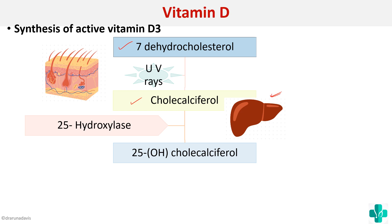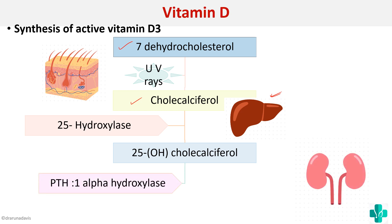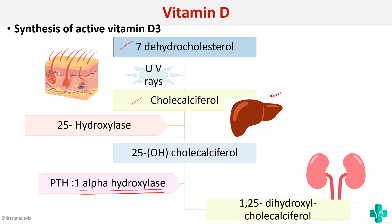In the liver, cholecalciferol is converted to 25-hydroxycholecalciferol by 25-hydroxylase. Then 25-hydroxycholecalciferol is converted to 1,25-dihydroxycholecalciferol by the enzyme 1-alpha-hydroxylase. This is an important rate-limiting step, and it is mediated by parathormone. 1,25-dihydroxycholecalciferol is the active form of vitamin D.